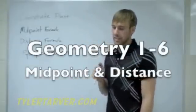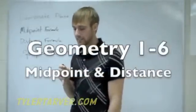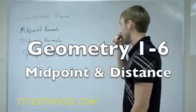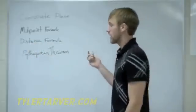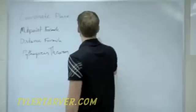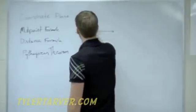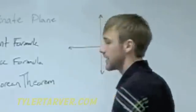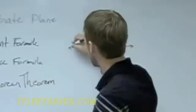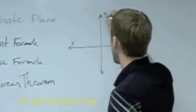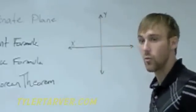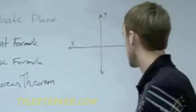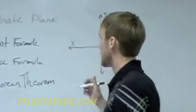Okay, section 1-6, we're doing midpoint and distance in the coordinate plane. Now, coordinate plane, first of all, in case you don't know, it's those little graph looking things you see. X axis is the one that goes across. Y axis is the one that goes up and down. So that's the coordinate plane right there.